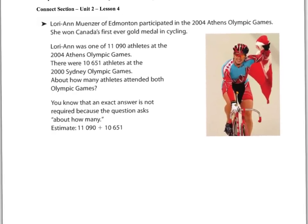We have an Olympic athlete. Lorianne Musner of Edmonton participated in the 2004 Athens Olympic Games and won Canada's first-ever gold medal in cycling. Lorianne was one of 11,090 athletes at the 2004 Athens Olympic Games. There were 10,651 athletes at the 2000 Sydney Olympic Games. About how many athletes attended both Olympic Games? We want to find how many athletes attended altogether. We know that an exact answer is not required because it says 'about how many' — whenever you see that, we just need an estimate, not an actual answer.